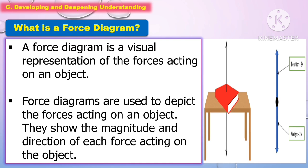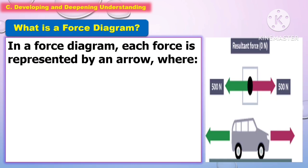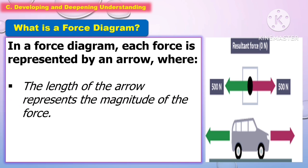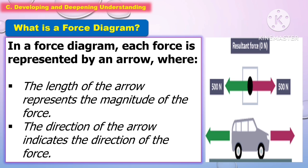What is a force diagram? A force diagram is a visual representation of the forces acting on an object. Force diagrams are used to depict the forces acting on an object, showing the magnitude and direction of each force. In a force diagram, each force is represented by an arrow, where the length of the arrow represents the magnitude of the force, and the direction of the arrow indicates the direction of the force.